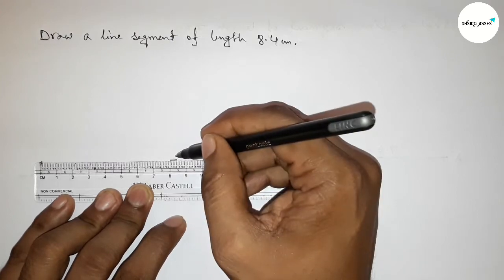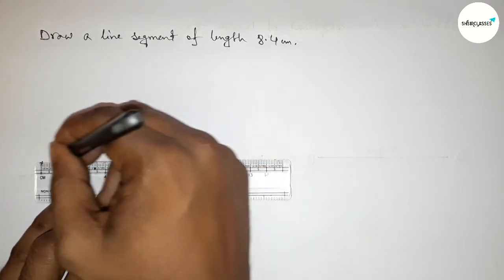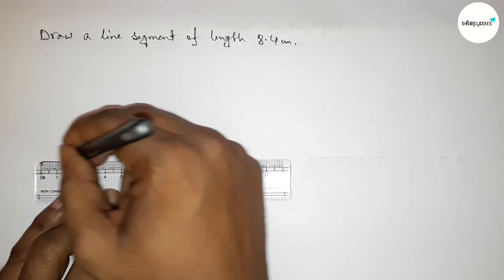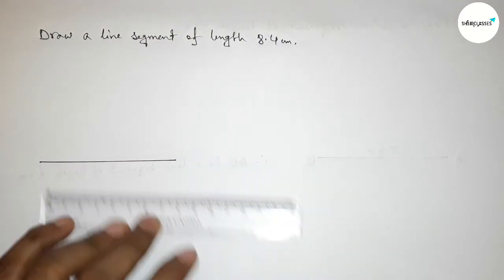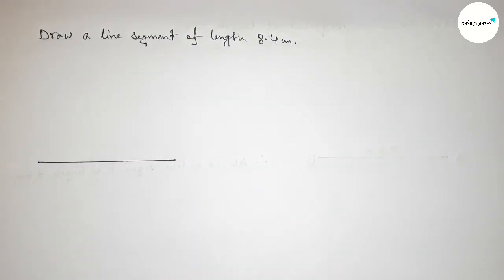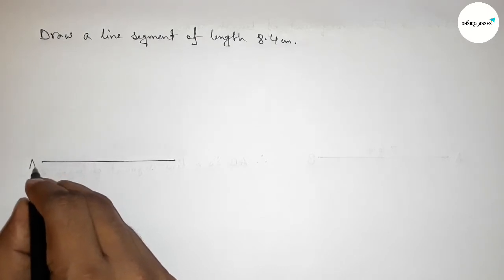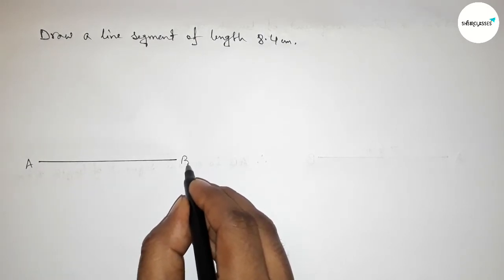First marking eight point four centimeter, then joining the line perfectly. Okay, so next taking here point A and here B.